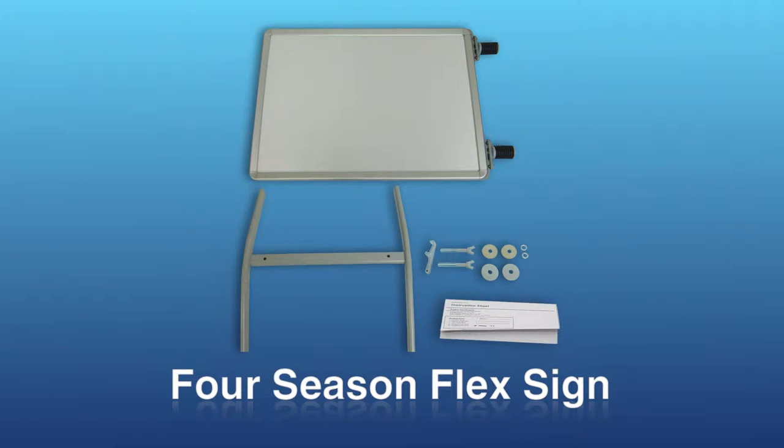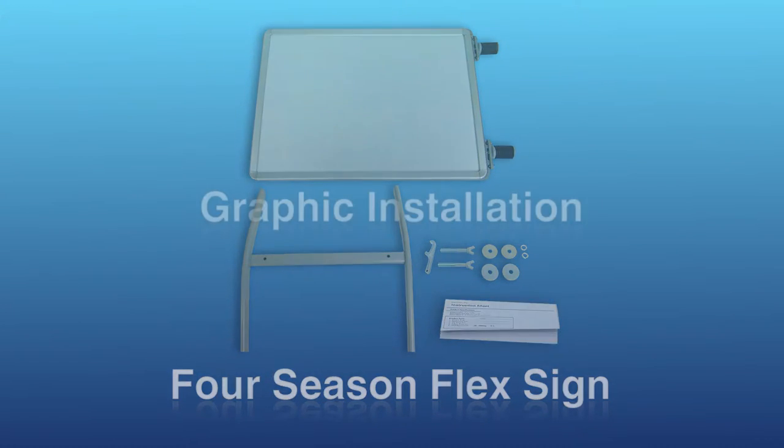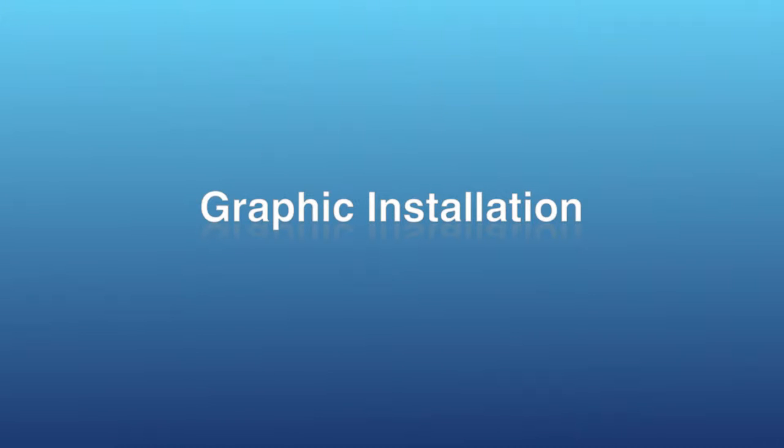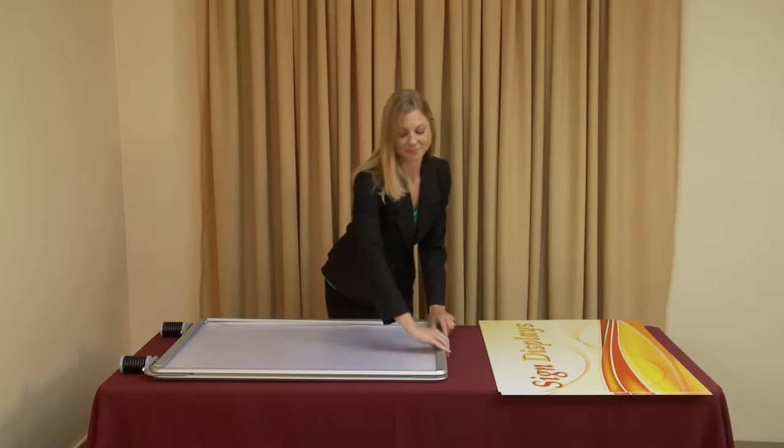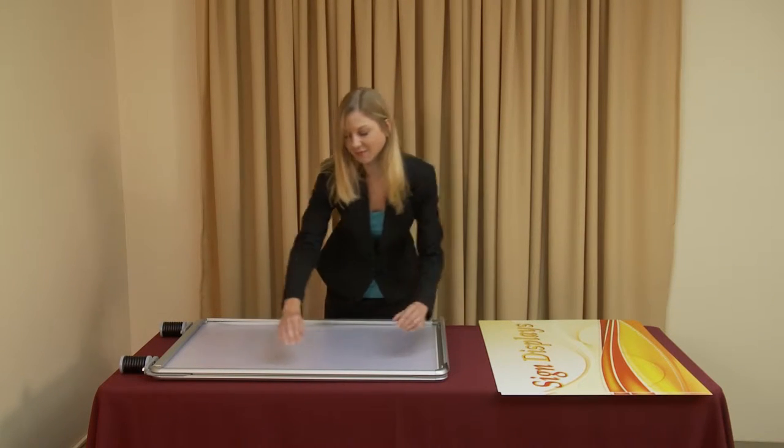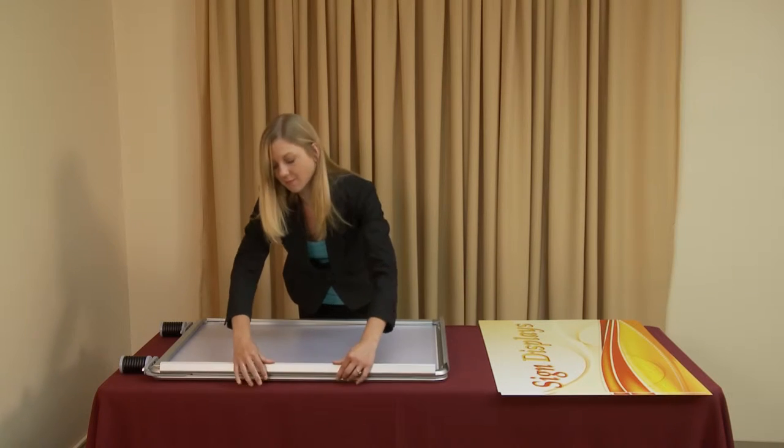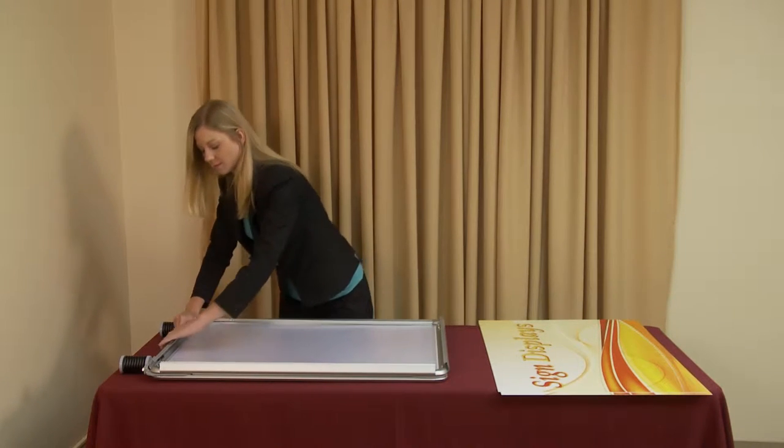Graphic installation and display setup of the Four Season Flex Sign is both quick and easy. Begin by removing all the parts from the box and placing them on a clean flat surface. Next, open all four hinge snap edges on the display's frame.